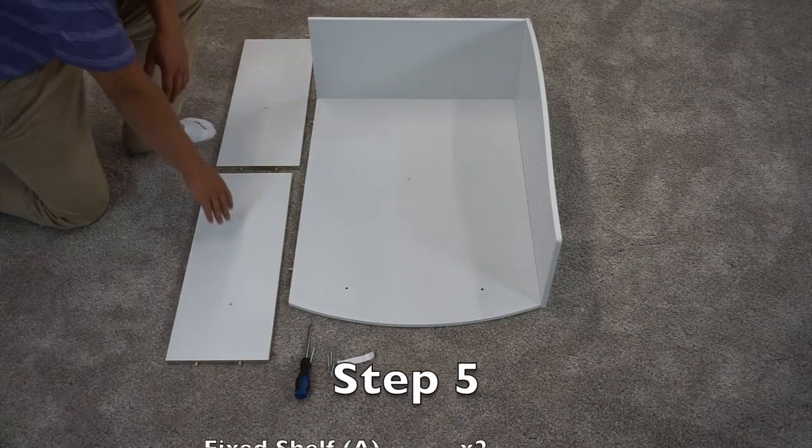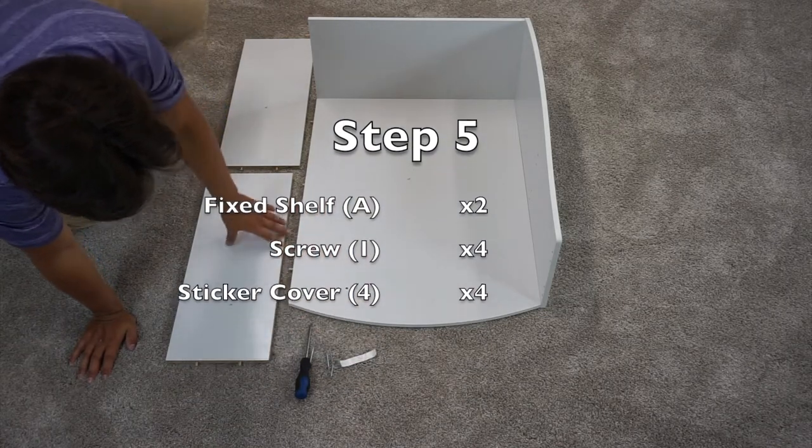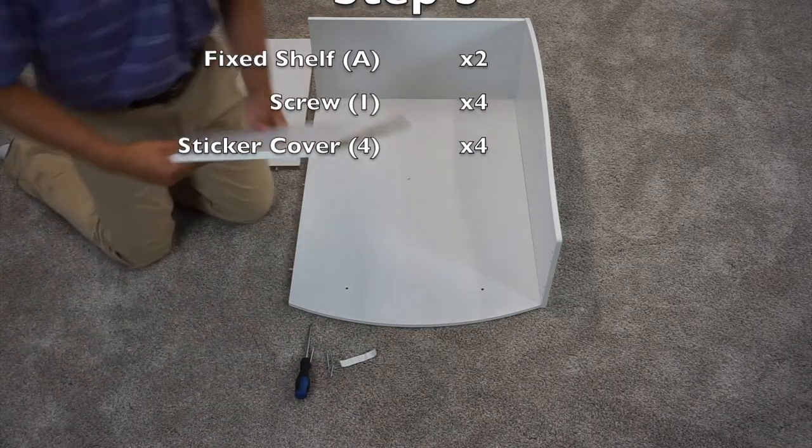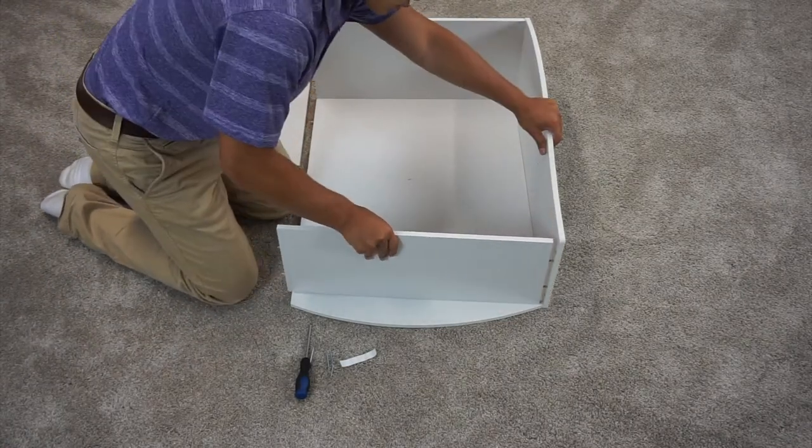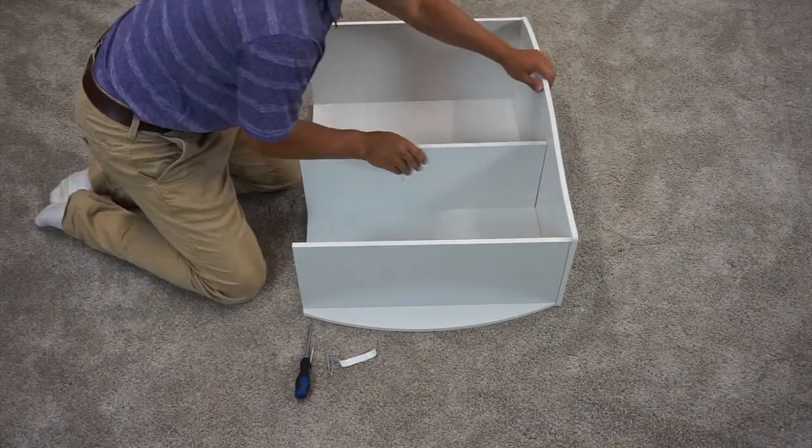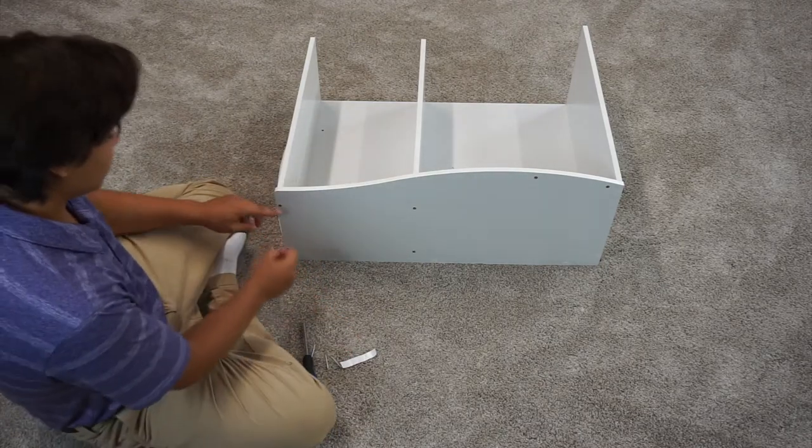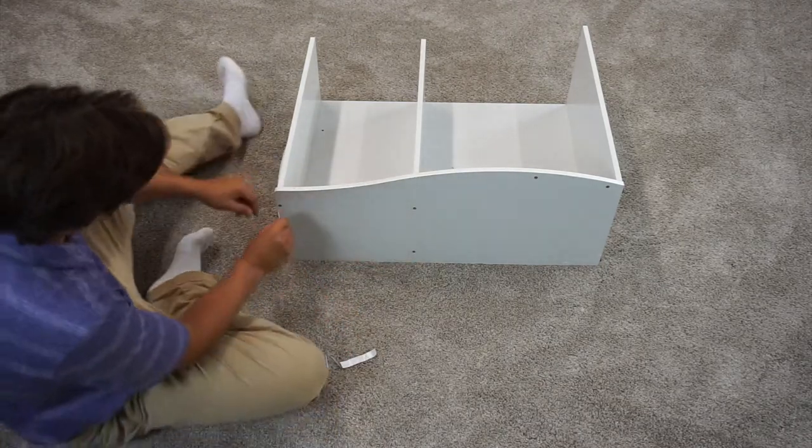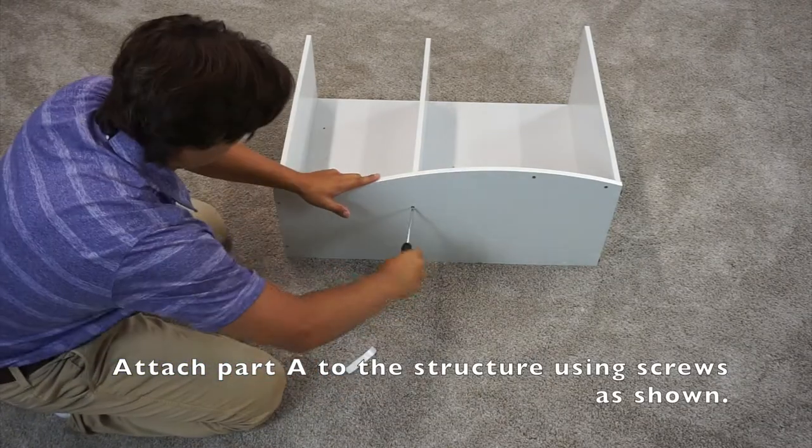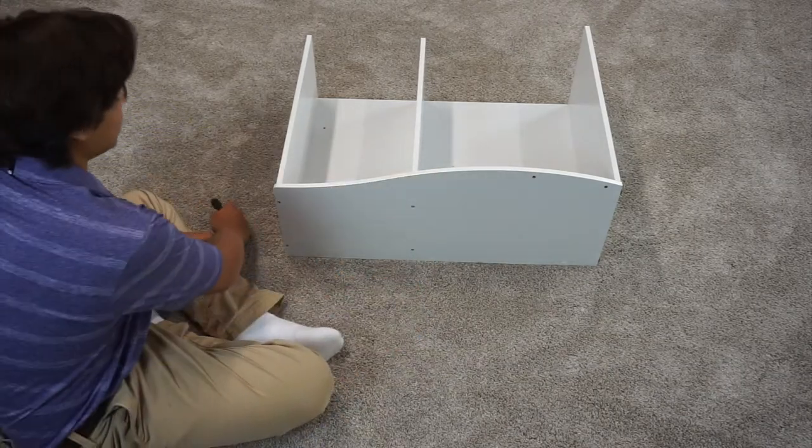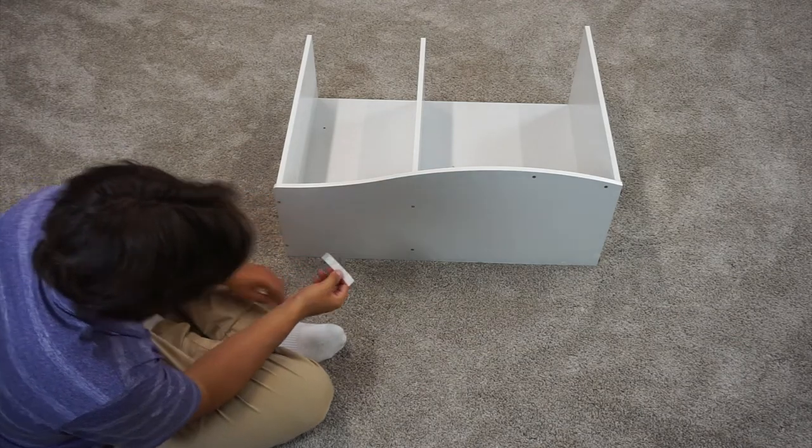For step five you're going to want to grab your two A panels, four screws, and four cover stickers. Attach your A panels with the finished side facing up, and then screw them into these four holes. Next you'll want to cover these screw heads with the cover stickers.